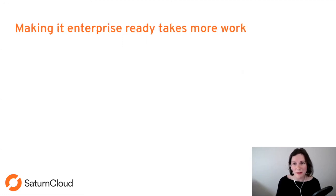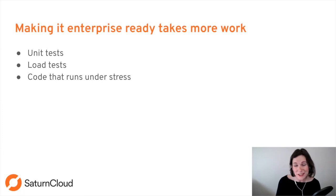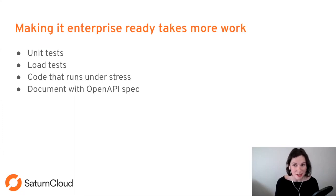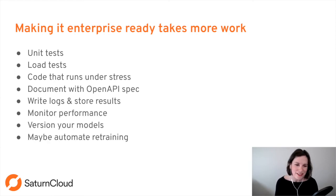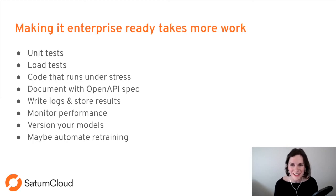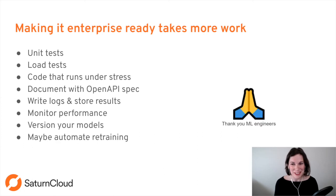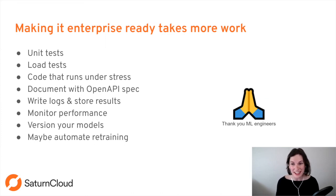Do you have to do all of these things as a data scientist? Good news: there is a world of people who love doing these kinds of things and they're called machine learning engineers. They love thinking about scale, versioning, and infrastructure. Getting a good relationship with an ML engineer at your company can really help you put things in prod without having to deal with every single one of these things on your own.